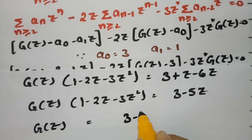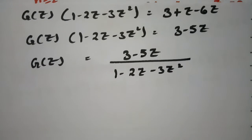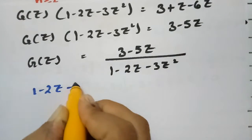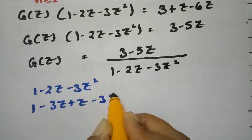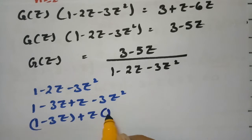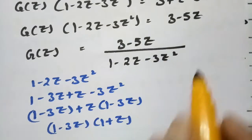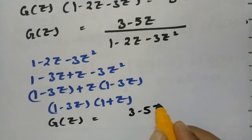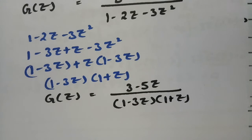Sending the factor to the other side: G(z) equals (3 minus 5z) divided by (1 minus 2z minus 3z²). Now I factorize the denominator: 1 minus 2z minus 3z² equals (1 minus 3z)(1 plus z). So G(z) equals (3 minus 5z) divided by (1 minus 3z)(1 plus z).